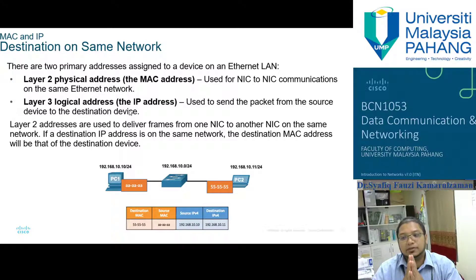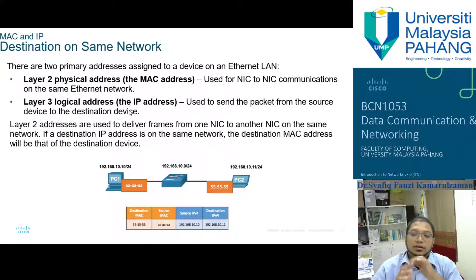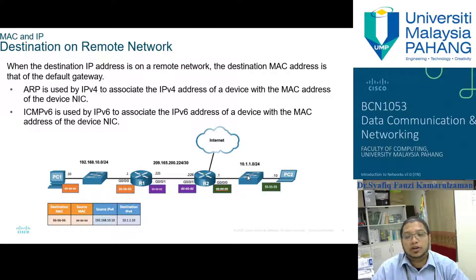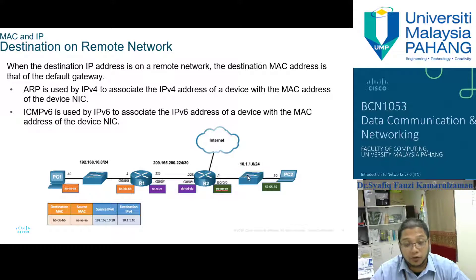Layer 2 addresses are used to deliver frames from one NIC to another NIC on the same network. If a destination IP address is on the same network, the destination MAC address will be that of the destination device. Within the same network, the source and destination MAC addresses represent the same computers as the source and destination IP addresses. When communicating with a remote network, the destination MAC address is usually the default gateway — typically the Wi-Fi router in your home.